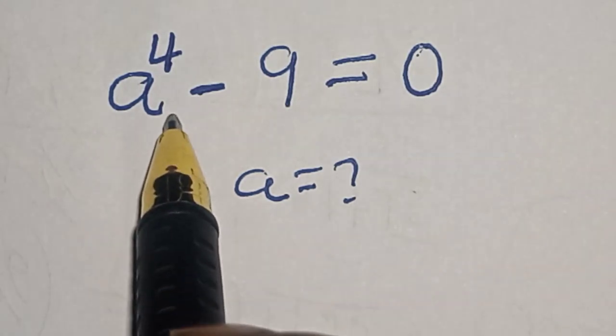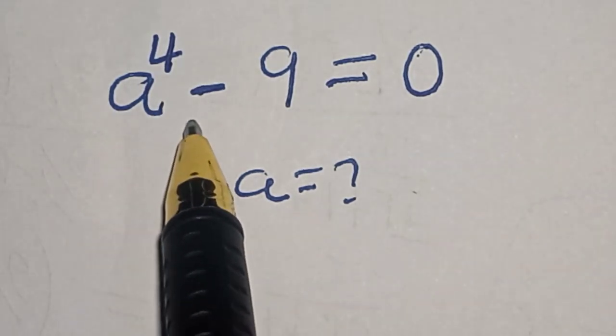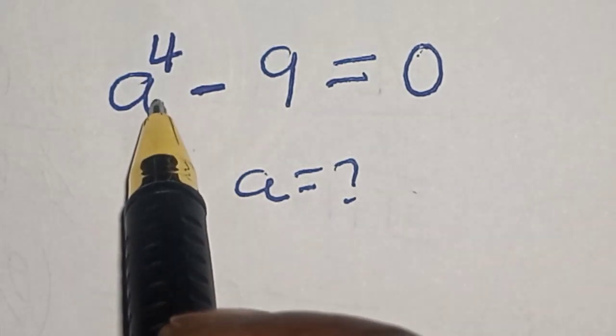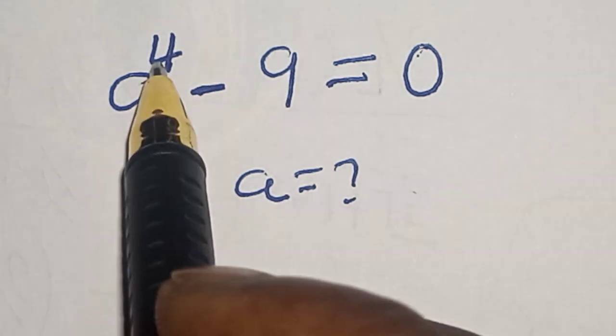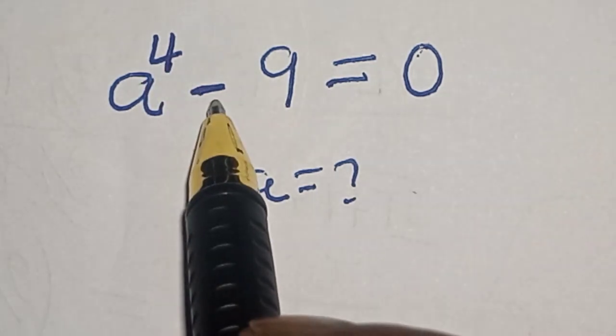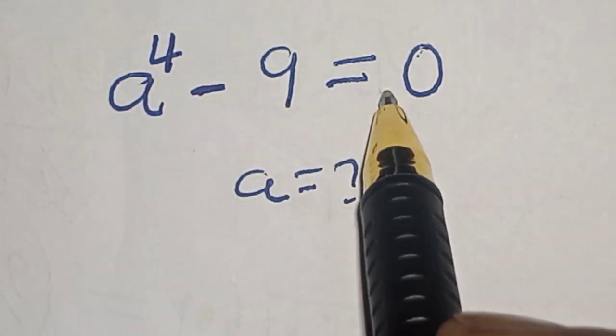Hello, welcome to MacGist. In this class, we want to find the value of a from this equation: a raised to power 4 minus 9 is equal to 0.